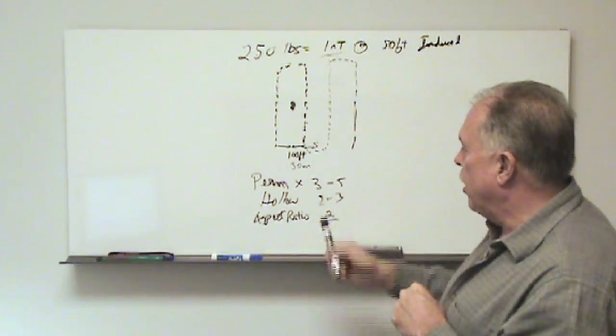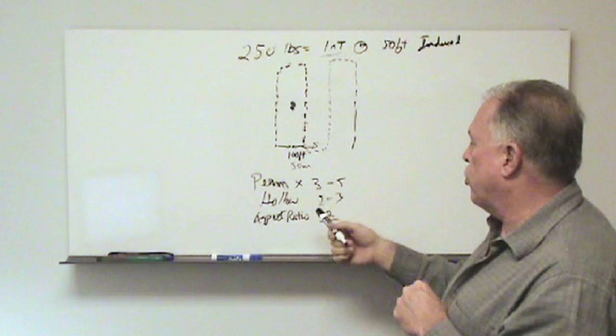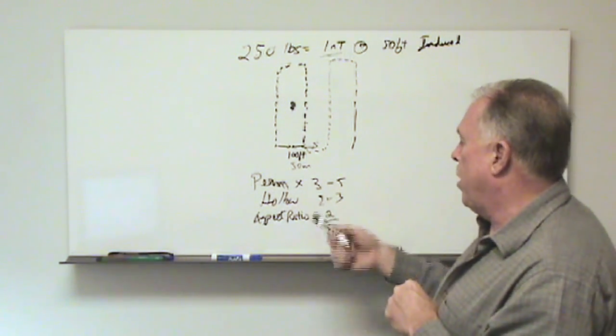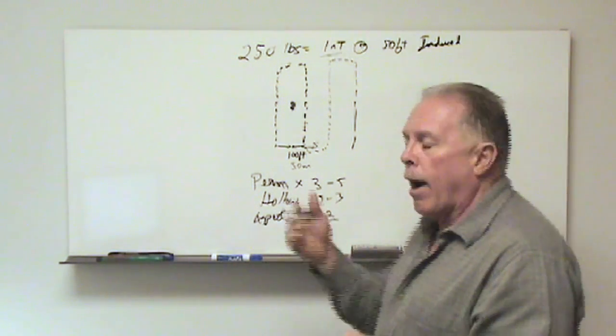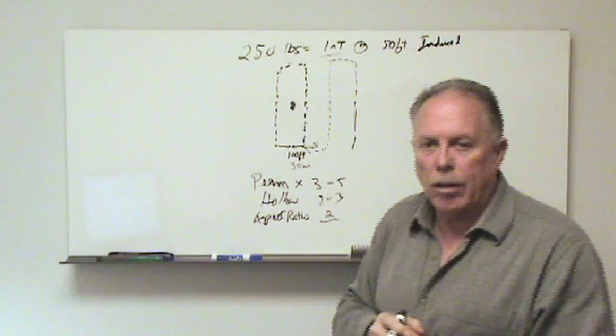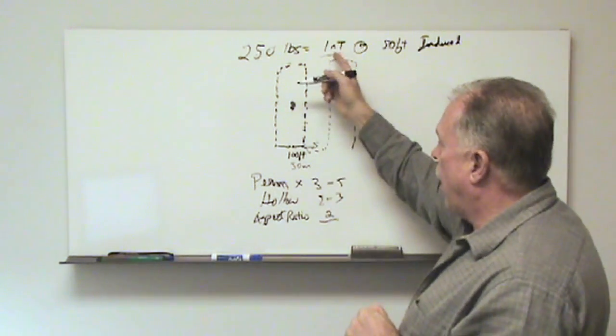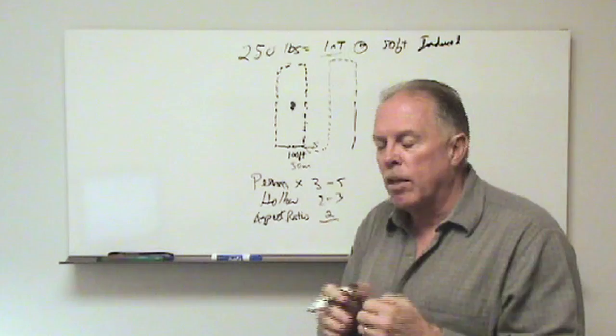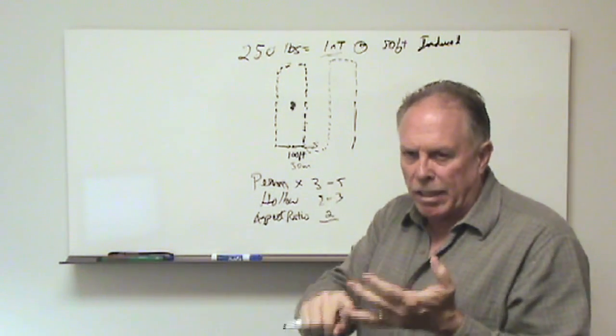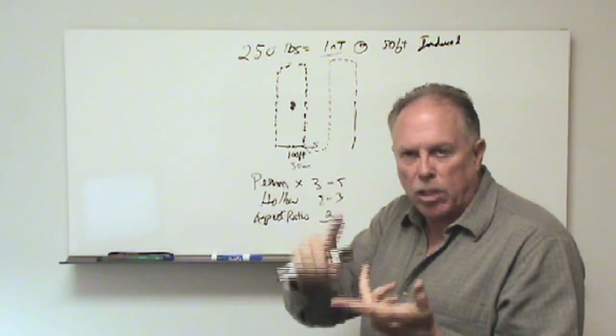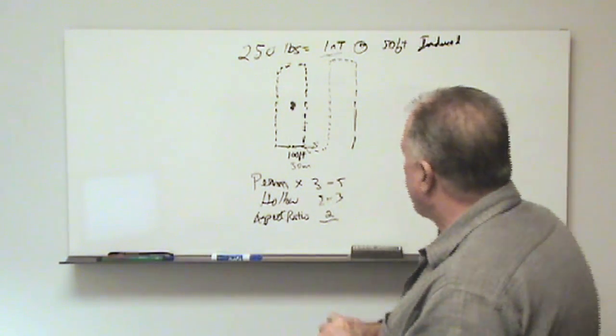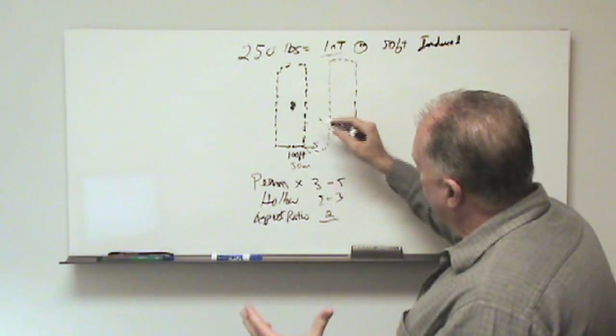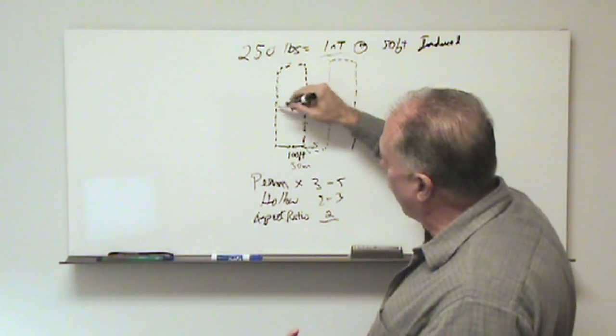So instead of being one nanotesla, it might be three times two is six and maybe it's a little bit longer. So here we could easily see a 10 nanotesla anomaly, which is very easy to detect even given those other noise sources such as wave noise, magnetotellurics, micropulsations and electrojet noise.